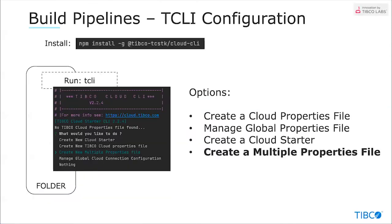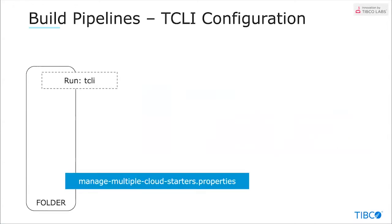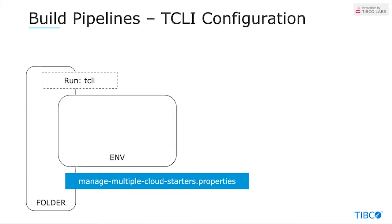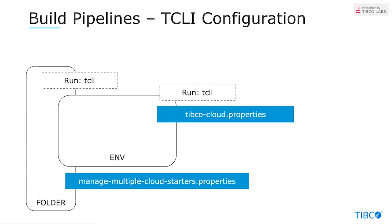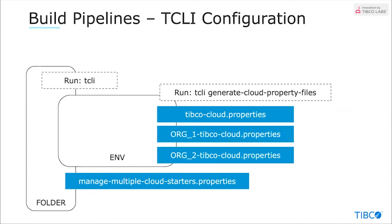Now let's talk about build pipelines, which is where that fourth option comes into play. When you run the TCLI in an empty folder, you have an option to create a multiple property file. Once you do that, you get a 'manage multiple cloud starters' properties file. I typically create an environment folder, run TCLI inside it to get a typocloud.properties file, and then run the TCLI 'generate cloud property file' task. This gives you a property file for every environment you want to include in your build pipeline.